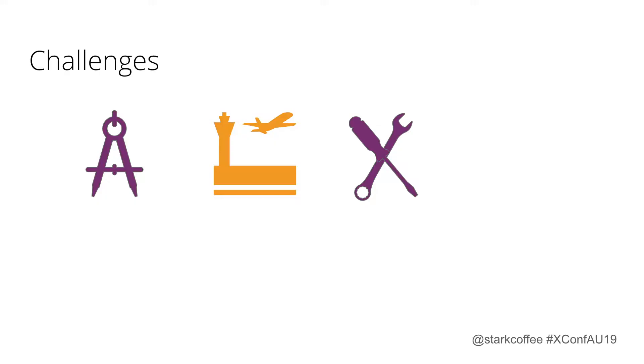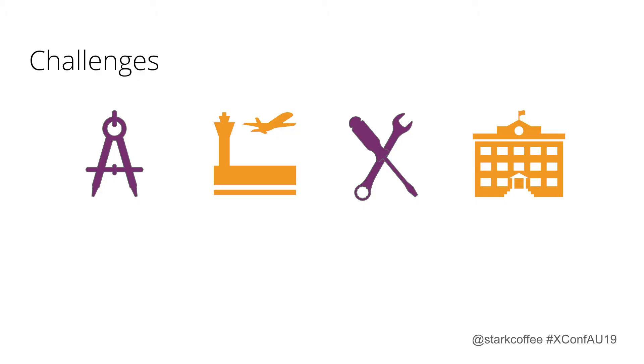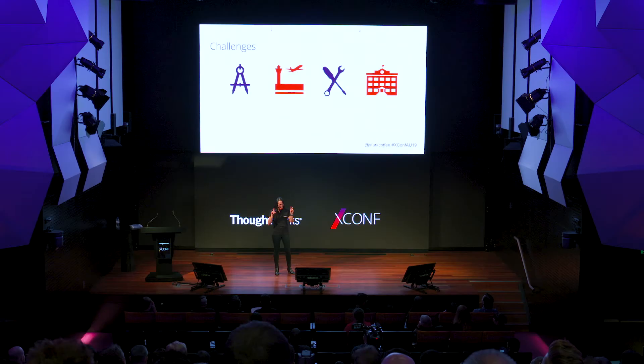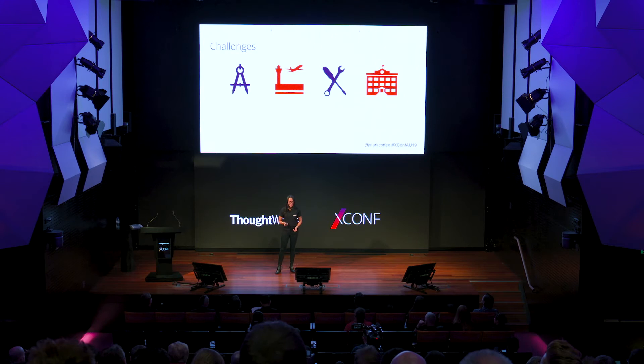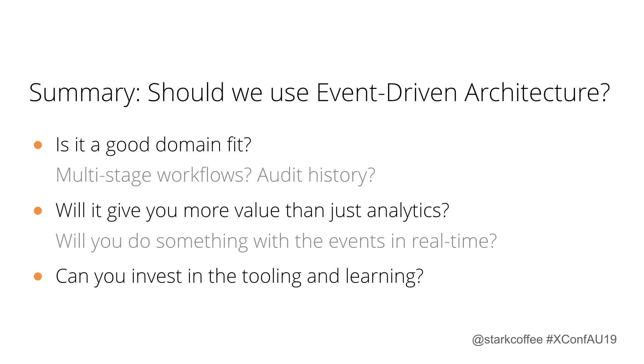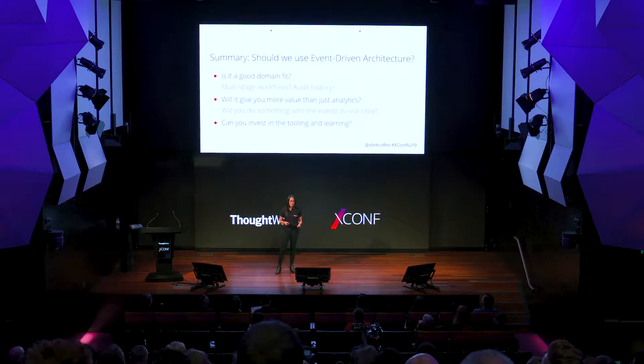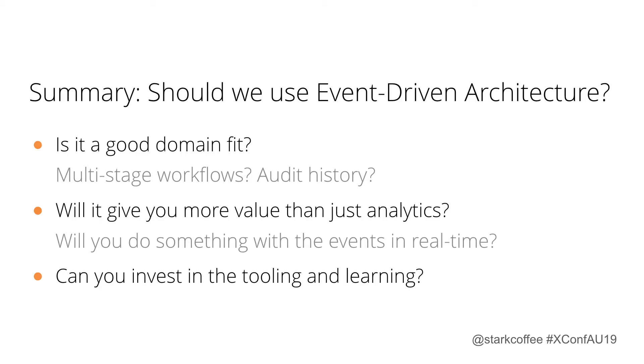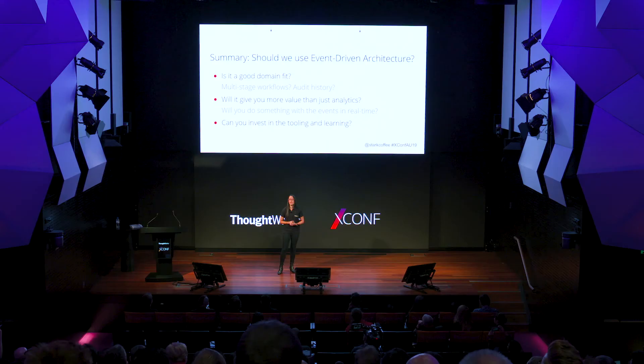The tooling is evolving and getting better, but it's probably not at the state of API request-driven tooling — things like circuit breakers and service mesh. There is a Zipkin plugin for Kafka now for tracing events through your system, which is exciting. And there are governance challenges where you might need a security model on top of your event topics or uphold requirements for GDPR. So, given all these challenges, when thinking should we use event-driven architecture: is it a good domain fit? Does your domain naturally have multi-stage workflows you might want to extend? Is audit history fundamental? Will it give you more value than just analytics?